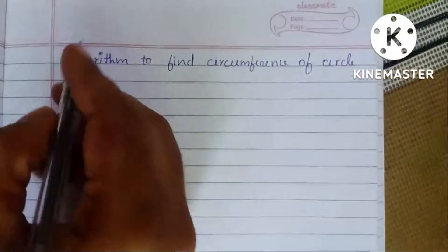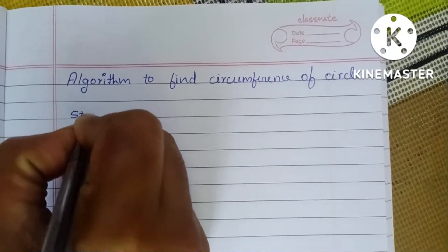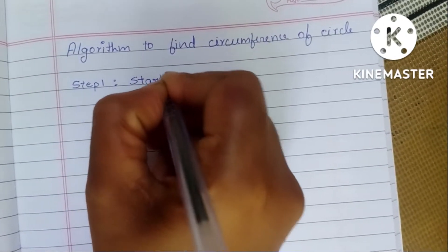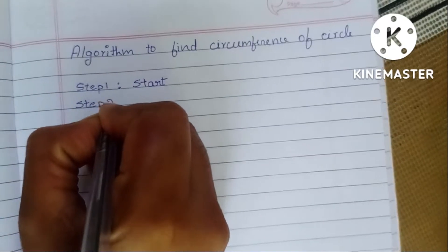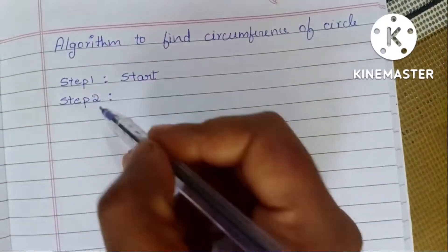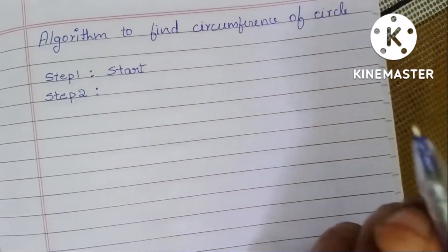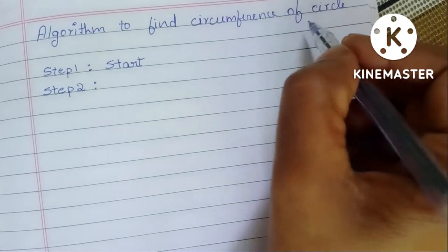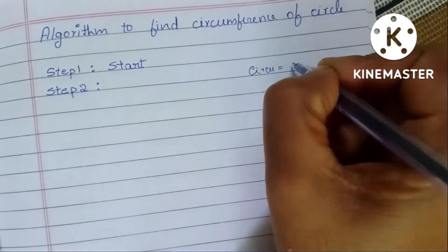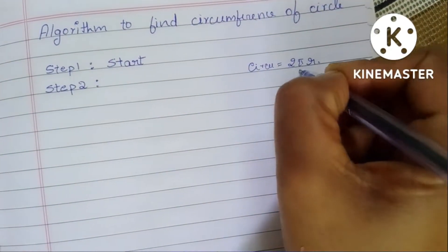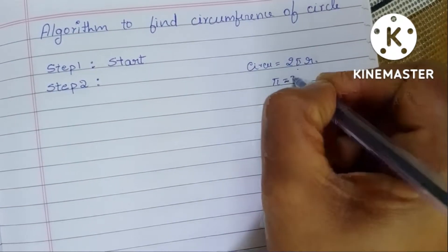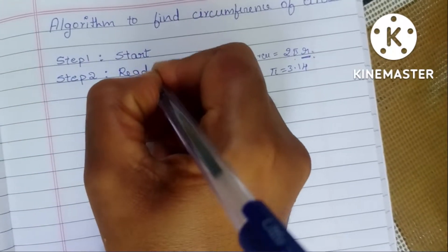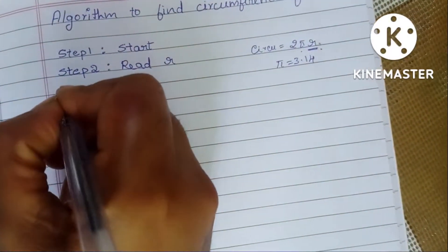To find the circumference of a circle: Step 1 — an algorithm always starts with the start statement. Step 2 — we need to read the input. The formula to find circumference of a circle is: circumference = 2 × π × r. Here π is a constant with value 3.14, and we read the radius r.